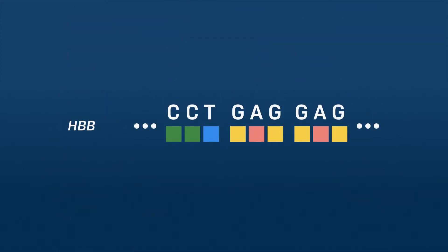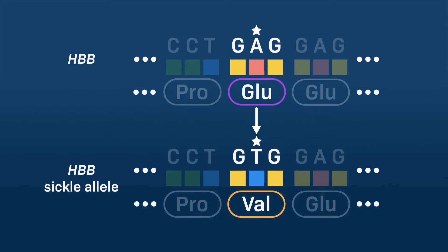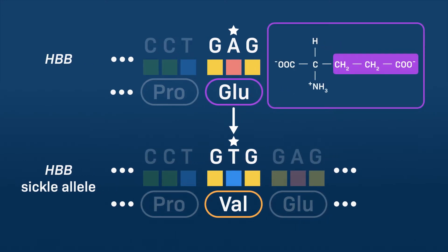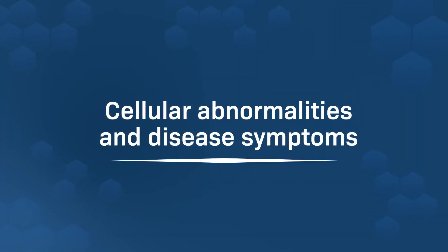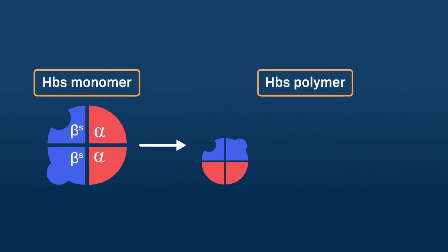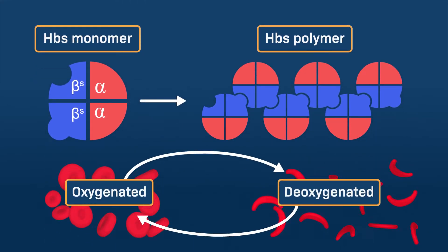Sickle cell anemia is caused by a single nucleotide substitution from adenine to thymine in the beta chain of adult hemoglobin. This point mutation leads to a single amino acid change from the negatively charged glutamic acid to the neutral hydrophobic valine. This change in surface electrical charge makes hemoglobin less soluble and prone to polymerization, especially at low oxygen tension upon delivery of oxygen to peripheral tissues.